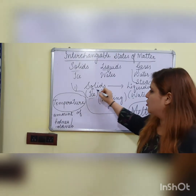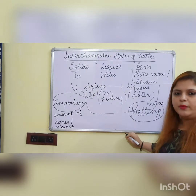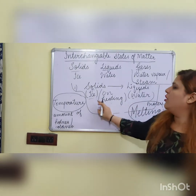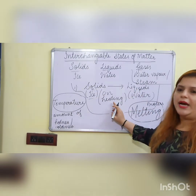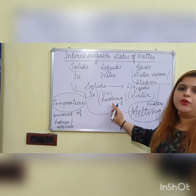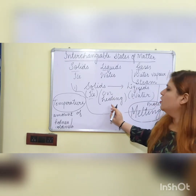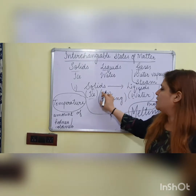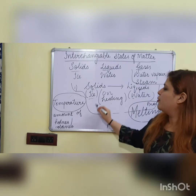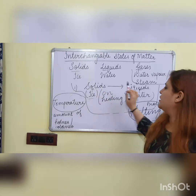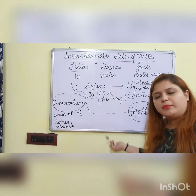Ice is a solid, water is a liquid. So melting is the changing of solid into liquid. And when does a solid change into a liquid? When it gets heated up. So at the end you write 'on heating.' The process of changing of solids into liquids on heating is called melting.